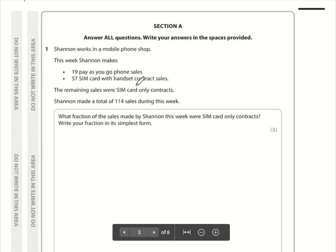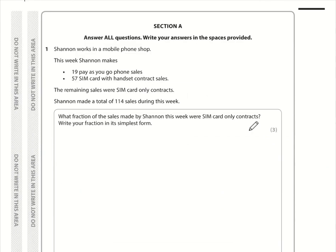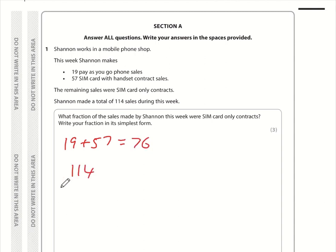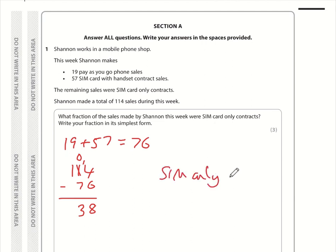Question 1: we need to work out the fraction that were made by SIM card only. She has done 19 pay-as-you-go and 57 SIM card with handsets, so that is 19 plus 57, which is 76. Therefore 114 minus 76 gives the SIM card only: 114 minus 76 equals 38. So she has made 38 SIM card only.